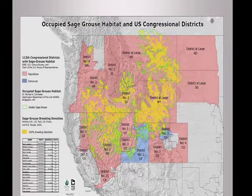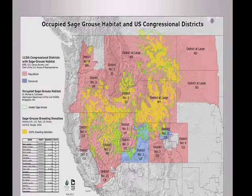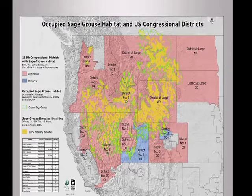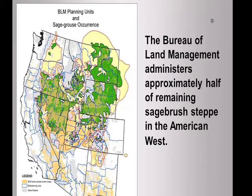Sage-grouse also live in a difficult political environment. The political representation within sage-grouse range makes for an interesting and sometimes difficult sell on Capitol Hill for the need to conserve greater sage-grouse. Fortunately, much of sage-grouse's remaining habitat is on public lands—federal and state—up to 70 percent, with the Bureau of Land Management managing about half of remaining sage-grouse habitat, approximately 60 million acres. Their management planning will be key to conservation of the species.